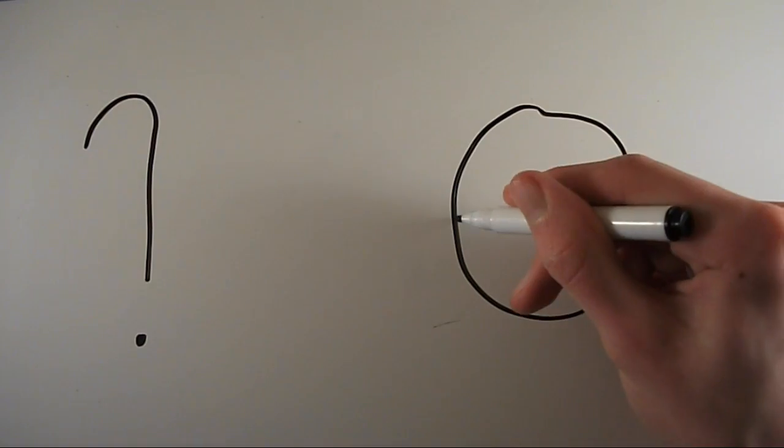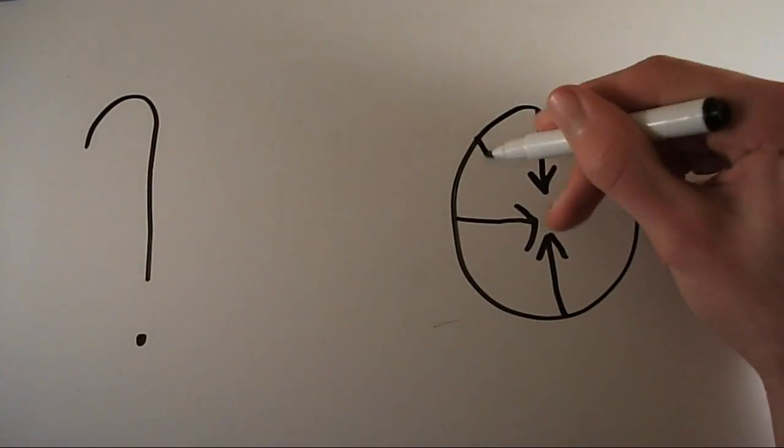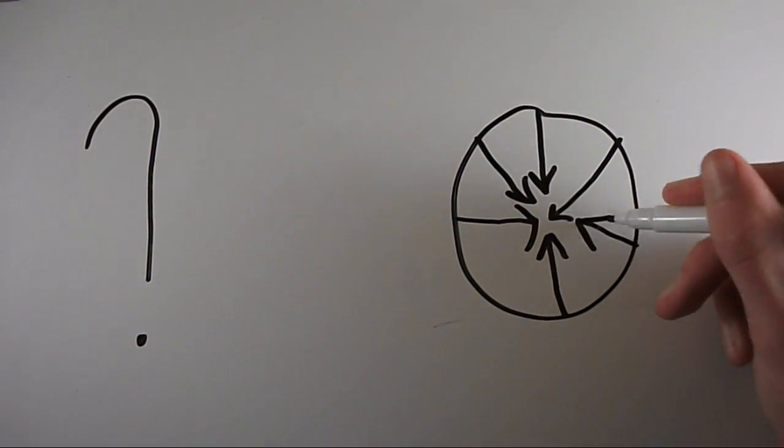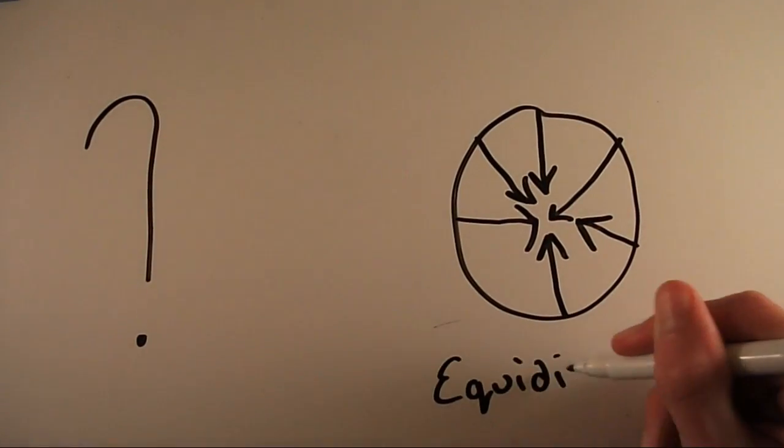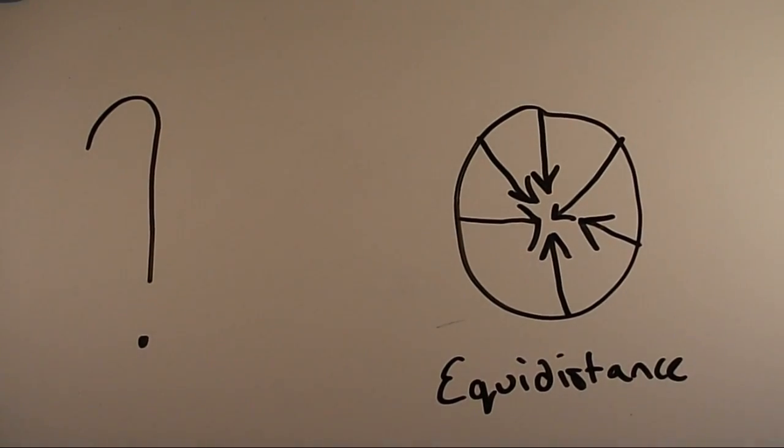So why are planets spheres in the first place? Planets are spherical shapes due to their gravity. The gravity on Earth and other planets are trying to pull everything into the center of its mass, and for the particles to be an equal distance from each other, the planet must turn into a sphere, as all the outside points of the sphere are roughly the same distance away from the center.